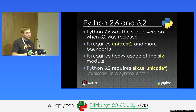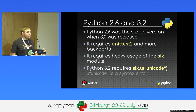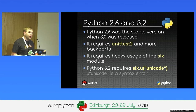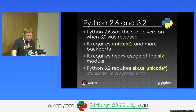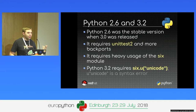Because of that u-prefix issue, some projects decided to do nothing for Python 3. If you really wanted to use new Python 3 features like the new methods of the unittest module, you could use backports like unittest2, but adding dependencies was difficult 10 years ago. So we had to wait until Python 3.2, which fixed the u-prefix issue.